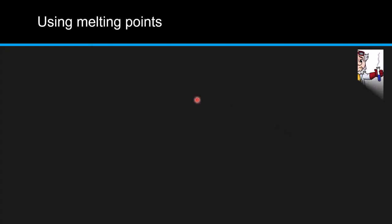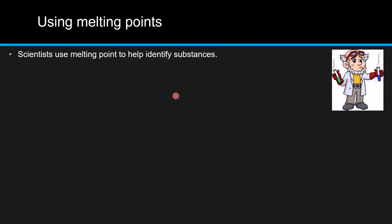Now let's talk about using melting points. Scientists use melting points to help identify substances — just like we use different tools to identify things, scientists use melting points as a key partner in identifying what a substance is.